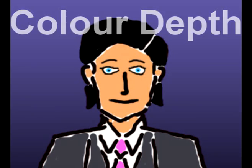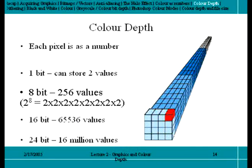Color Depth is the number of colors that can be displayed on a computer system. The color of each pixel is a number in binary, the computer's language.